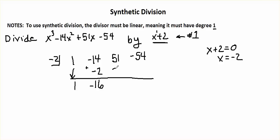We're going to multiply negative 2 times negative 16, which is positive 32. Then we're going to add these two numbers and we get 83. Now we're going to multiply again: negative 2 times 83 is negative 166. And when we add we're going to get negative 220.